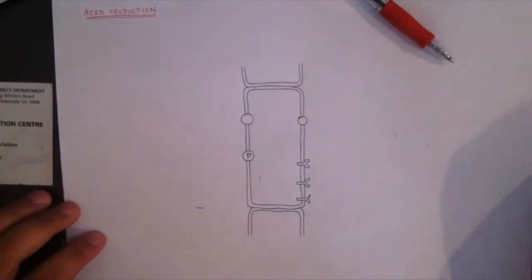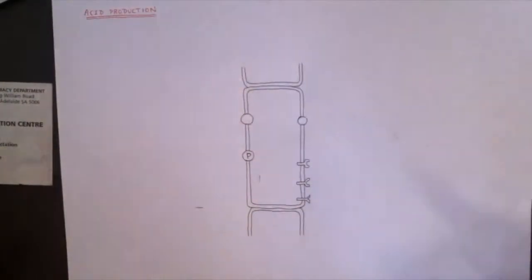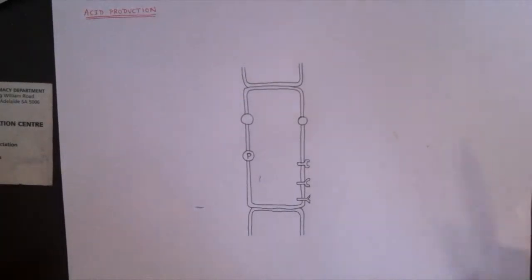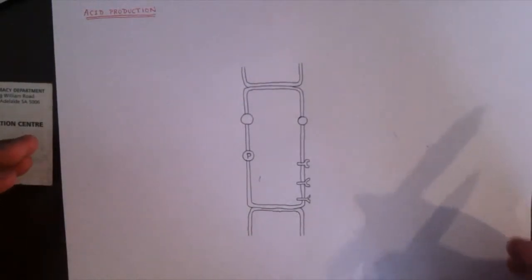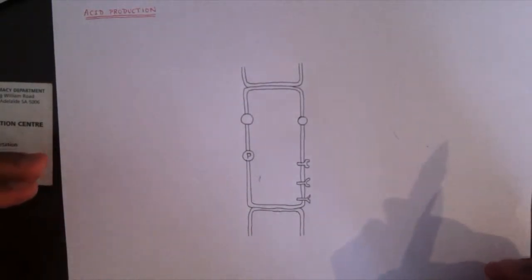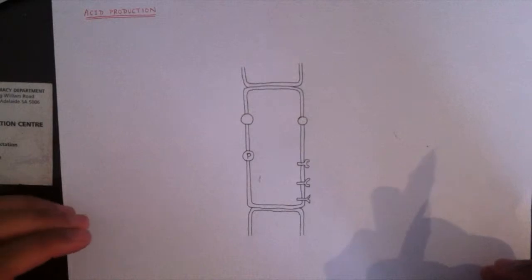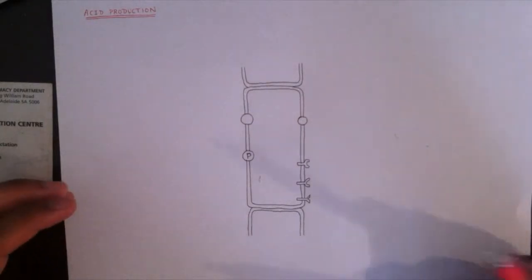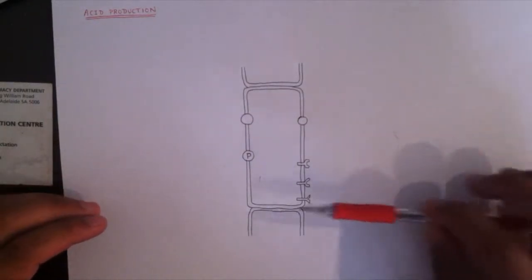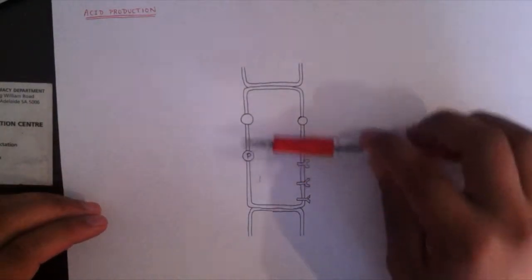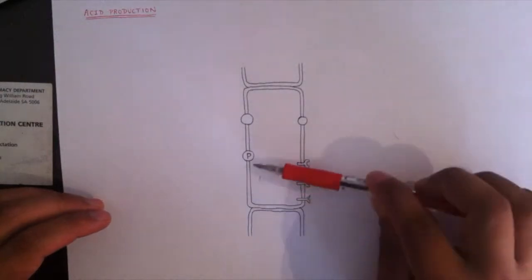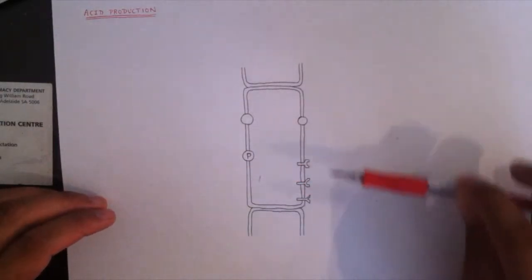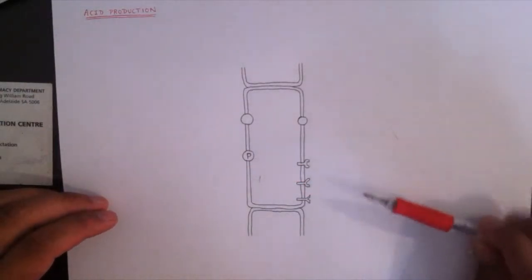I'm going to quickly talk about acid production in the stomach. Here's a quick diagram of the parietal cells in the stomach. What we have here are some channels — this one is the proton pump, and these ones are our receptors.